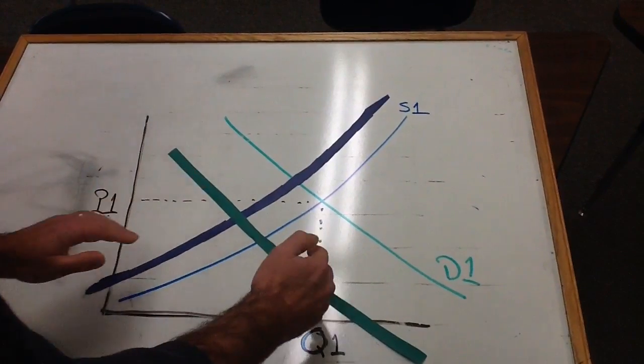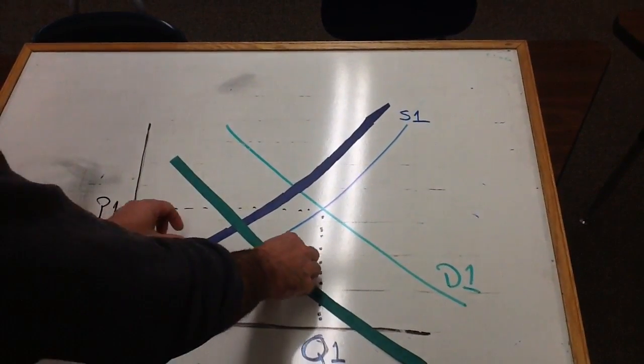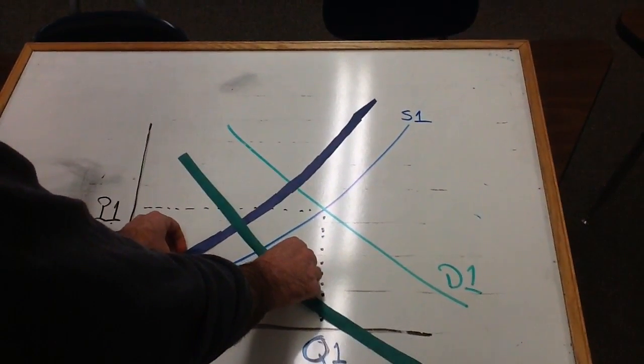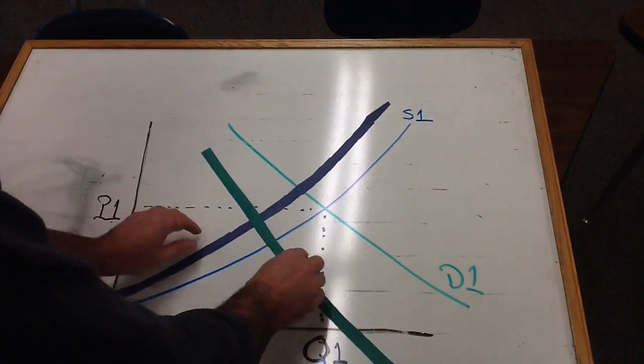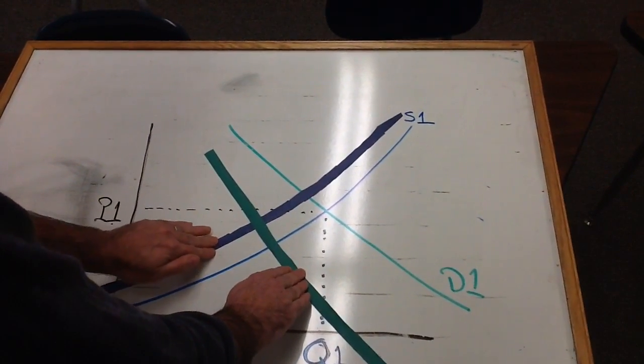Okay, now what if, that's when they shift in the same direction. What if they shift in opposite directions? What if demand goes up and supply goes down?